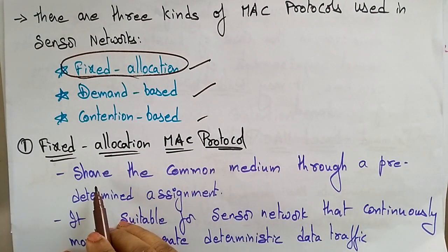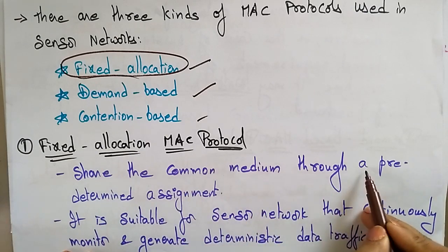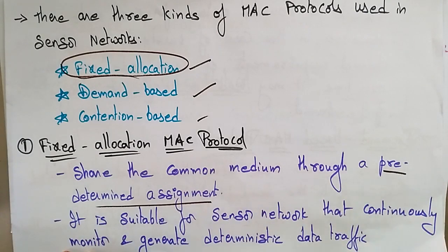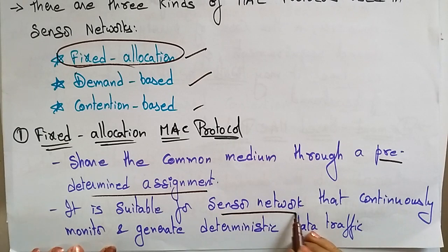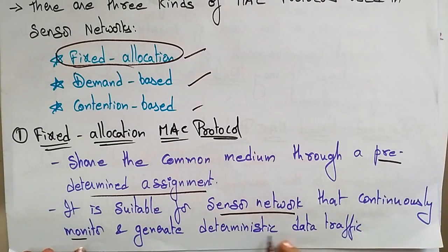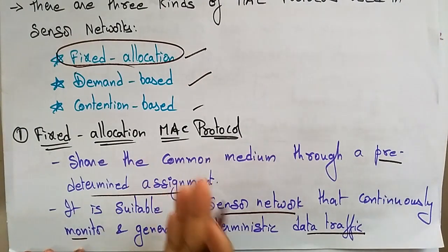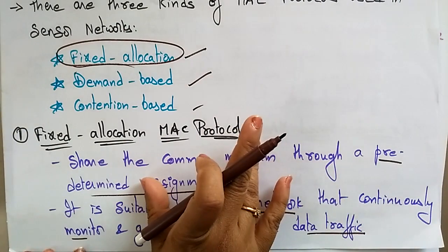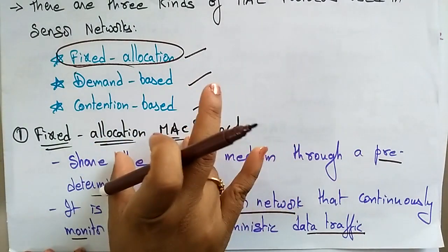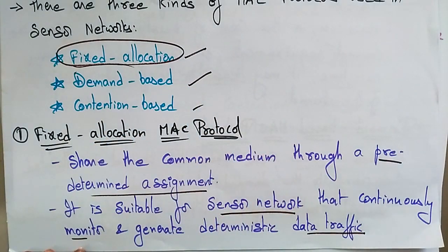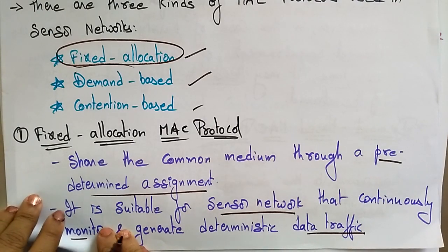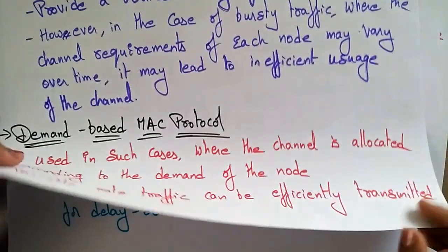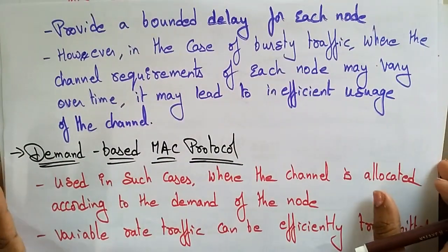The fixed allocation MAC protocol shares the common media through a pre-determined schedule. This protocol is suitable for sensor networks that continuously monitor and generate deterministic data traffic. It provides a bounded delay for each node, making it well-suited for applications requiring consistent and predictable data transmission.